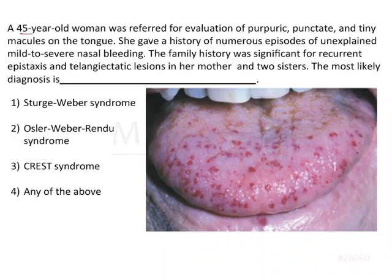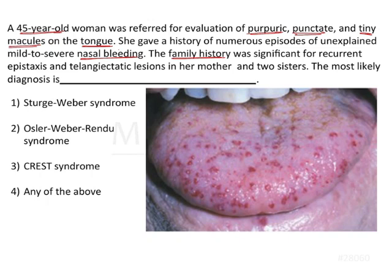A 45-year-old woman was referred for evaluation of purpuric, punctate and tiny macules on the tongue. She gave a history of numerous episodes of unexplained mild to severe nasal bleeding. The family history was significant for recurrent epistaxis and telangiectatic lesions in her mother and two sisters. The most likely diagnosis is?